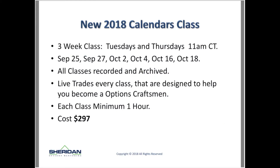The new 2018 calendars class will be a three-week class on Tuesdays and Thursdays at 11 a.m. Central, starting on September 25th — a week from Tuesday. We skip one week because I'll be out in California and Arizona doing some seminars, so it'll be two weeks, skip a week, then a third week. Sometimes it's good to skip a week to let you absorb the material a little bit more. All classes are recorded and archived, with live trades every class designed to help you become an options craftsman.